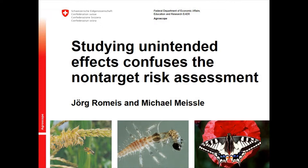In the BT crops, for example, where we have a clear target organism like the European corn borer or the Western corn rootworm, we are concerned about potential adverse effects on other arthropods in our agricultural system that we value. Among those, you have pollinators like the honey bee that visits maize plants to collect pollen, predators and parasitoids that help control insect pests, and protected species of cultural value like certain butterflies.